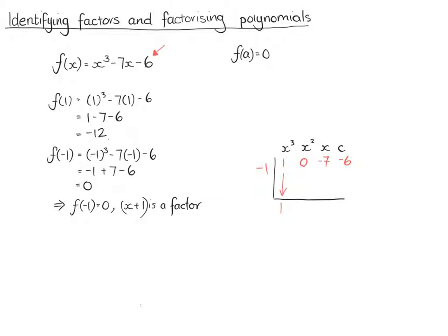We bring the 1 down. We multiply by minus 1, which gives us minus 1. Then we add down the way. So 0 add minus 1 is minus 1. We go across and we multiply, times minus 1, we get 1. Then we add those together, and we get minus 6. Then we move it across, and we're multiplying. So multiply by minus 1, which gives us 6. Add those together, and we get 0.